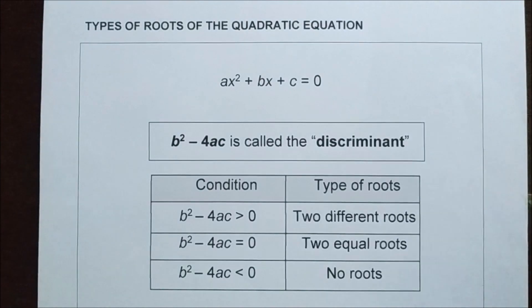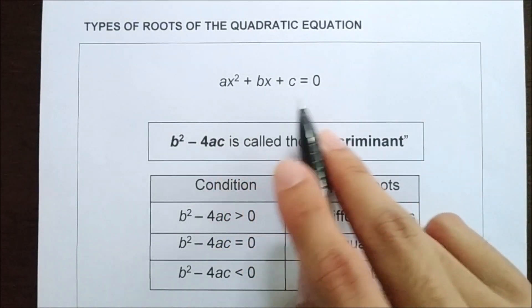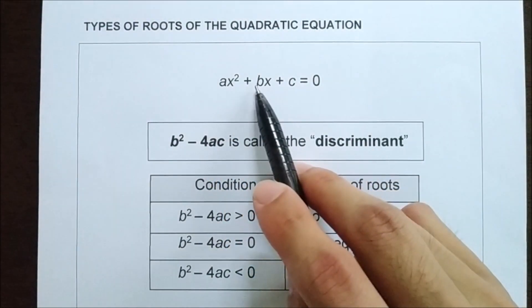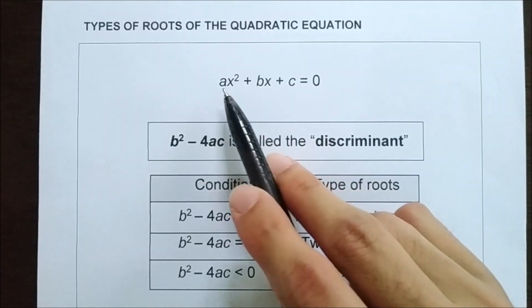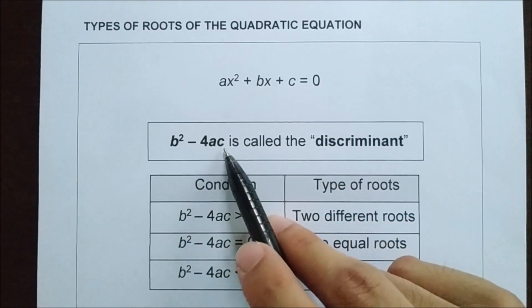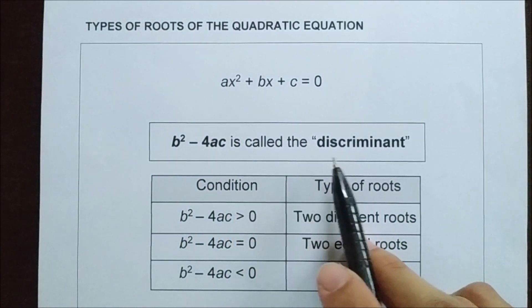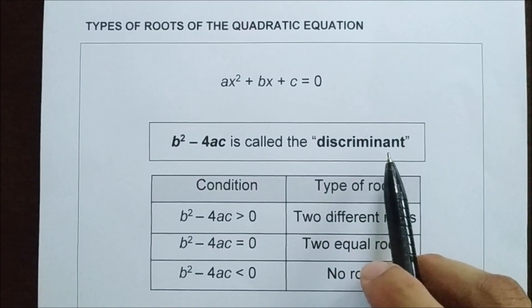Given a quadratic equation in the general form, if we take the value of b, a, and c and put it in this way, we call this the discriminant.